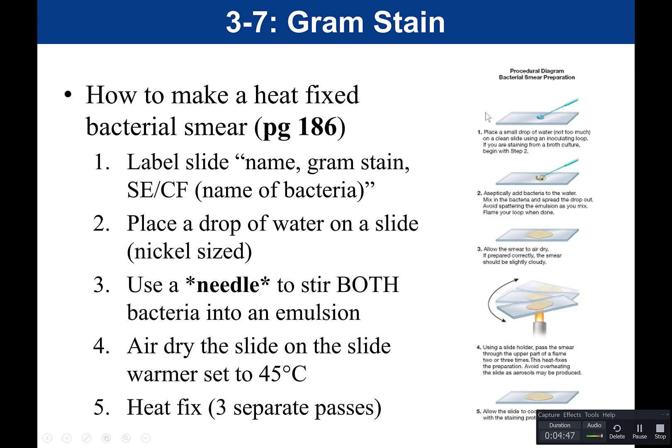We're using Staphylococcus epidermidis and Citrobacter freundii — one gram-positive, one gram-negative. After labeling the slide, place a drop of water so that the puddle is approximately nickel-sized. I use a squirt bottle to add a little water to a loop and then place it on the slide. You want that circle of water to be about the size of a nickel.